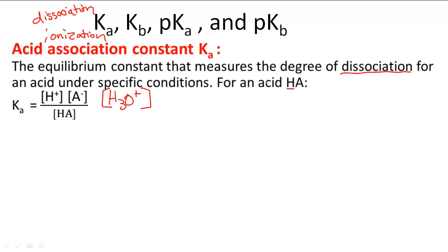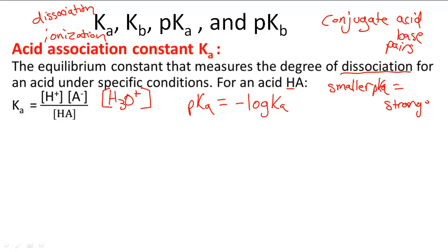We can use pKa in relating conjugate acid base pairs, and that's why we use Ka and Kb. We also use something called pKa. pKa is the negative log of Ka. This tells us if something is a stronger or weaker acid. The smaller the pKa is, the stronger the acid is.